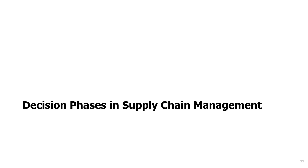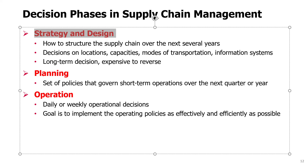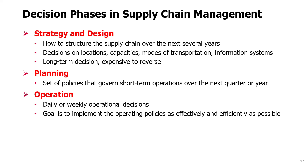In supply chain management, we distinguish between three types of decisions or decision phases. Strategy and design are the long-term decisions. They are about how to structure the supply chain over the next several years or maybe even longer.